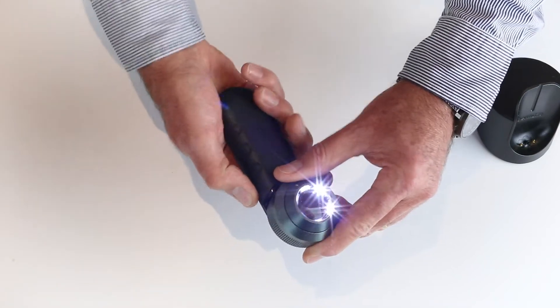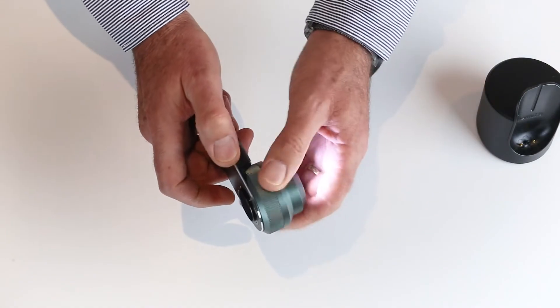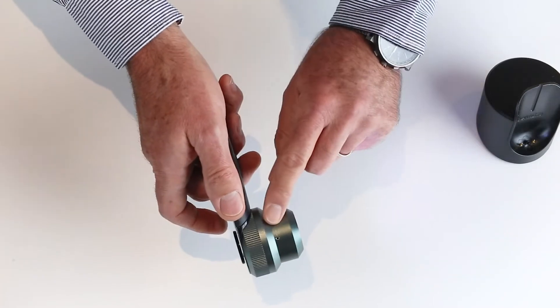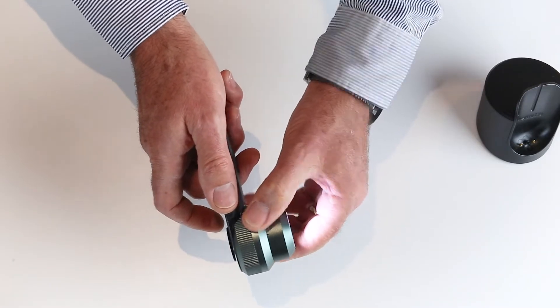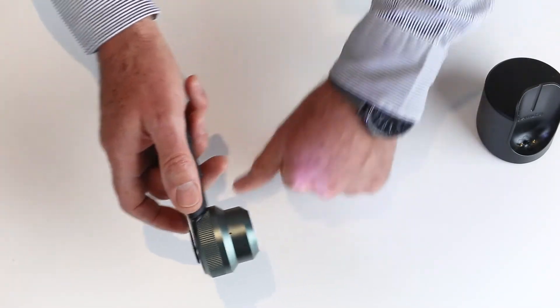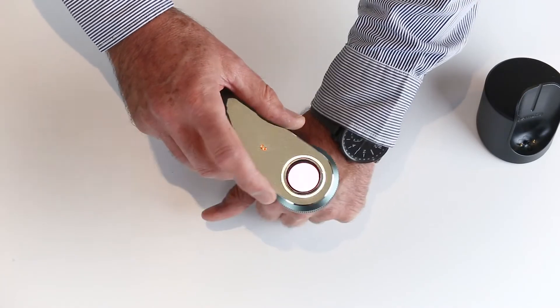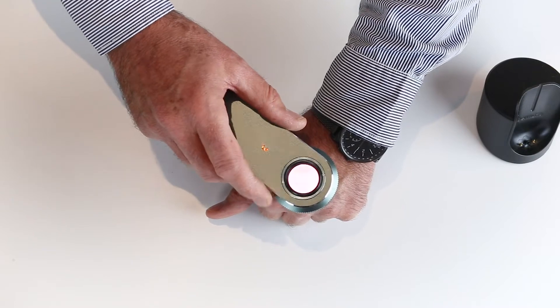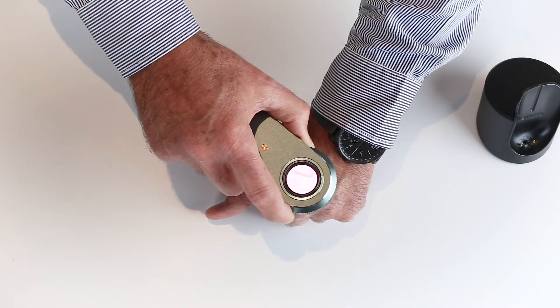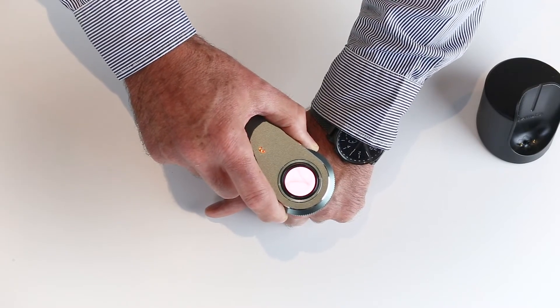When using the dermlite, wind out the spacer to the large center line. This is the perfect place to start from. Make contact with the skin and the contact plate. Take your head right down to the lens, then focus for your own vision to have a good look at the lesion.